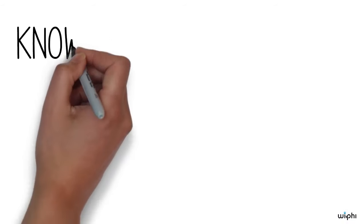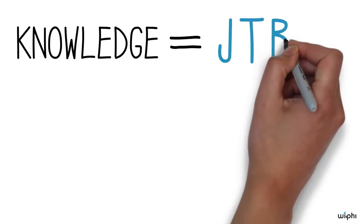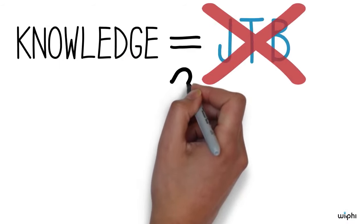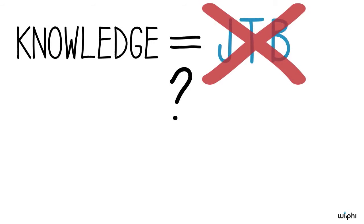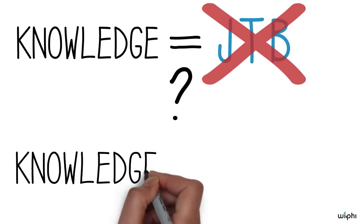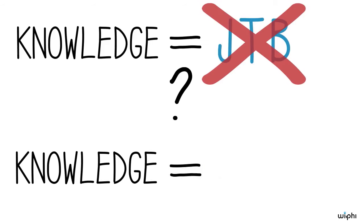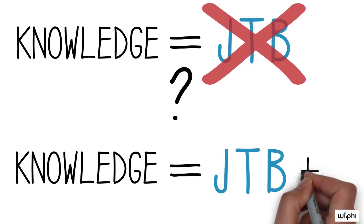If it doesn't work to analyze knowledge as justified true belief, what does work? You may have noticed that the Gettier cases we've talked about so far have some features in common, and you might think that we could take account of those features and add a simple patch to the JTB analysis to fix it up. But, as we'll see in the next two videos in this series, the problem of deciding what to add to true belief to get knowledge turns out to be surprisingly difficult.